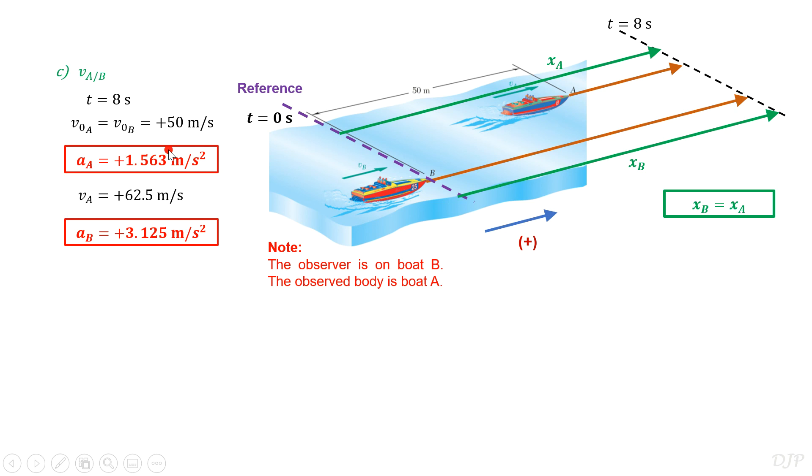Since we have already the final velocity of boat A, let us solve for the final velocity of boat B using the second kinematic equation. By substitution, we now obtain its final velocity as positive 75 meters per second.